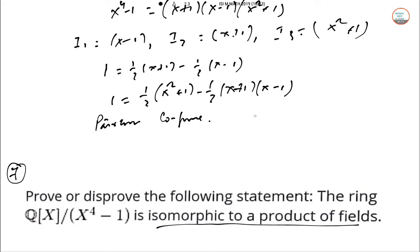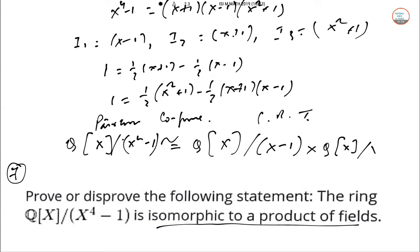So by the Chinese Remainder Theorem (CRT), we can write Q[X]/(X⁴-1) ≅ Q[X]/(X-1) × Q[X]/(X+1) × Q[X]/(X²+1).